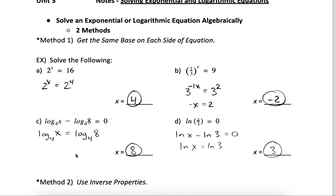To solve logs using that same base mentality, as long as we can get the logs on both sides of the equal sign to have the same base, we can ignore the logs and just set up equations of those inputs. Adding log base 4 of 8 to both sides gives me this equation. Because I have logs on either side with the same base, I can ignore them and just say x is 8.